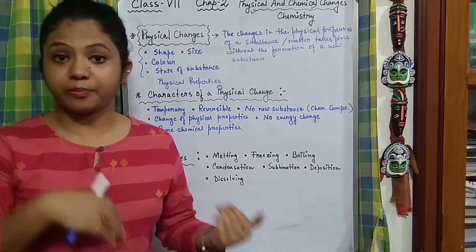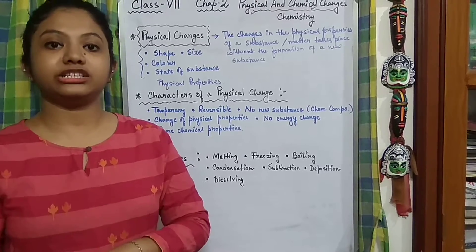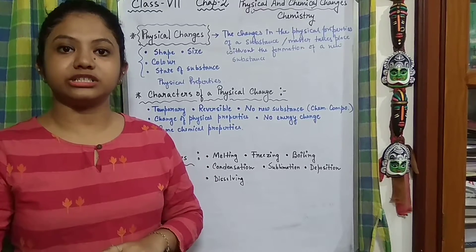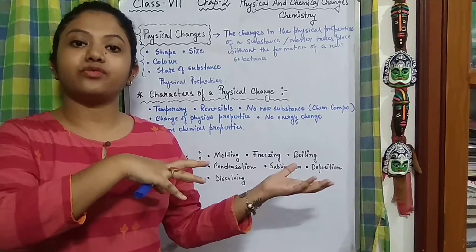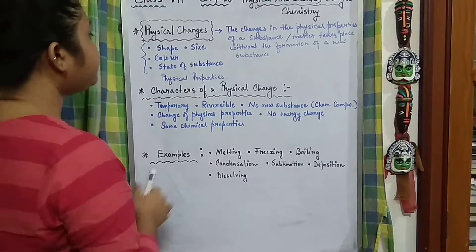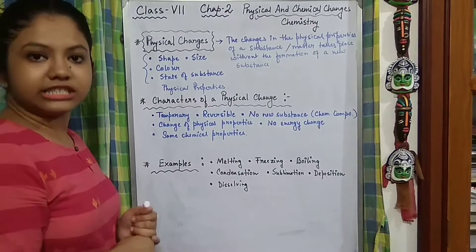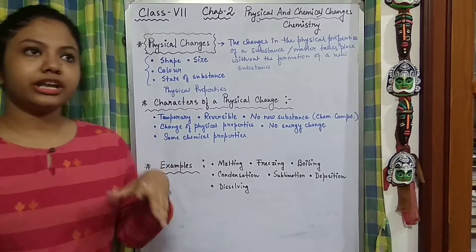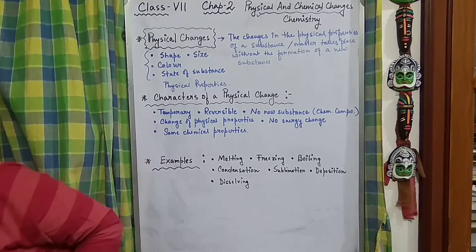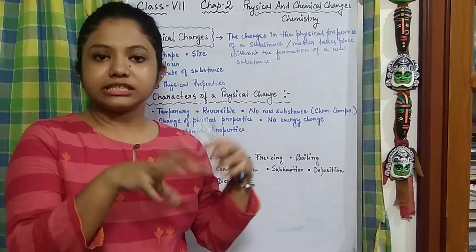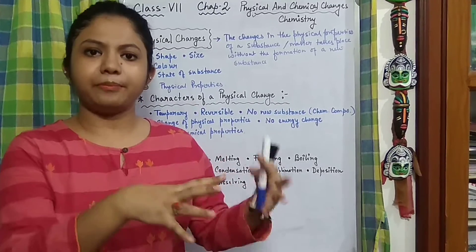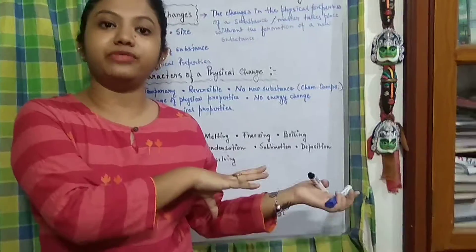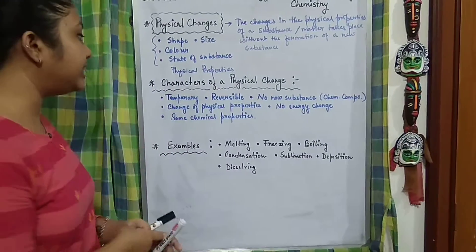The important thing about physical changes is that no new substance is formed, and no changes in the chemical property or chemical constitution occur — where it involves the molecules, the composition of the molecules and their bonding, intermolecular spaces and various properties. Where a change cannot be reversed, it will be irreversible, one directional change, and we cannot get the previous form of the substance back. So what are the characteristics of a physical change? First of all, it is generally a temporary change. Why it is temporary? Because these kinds of changes are apparent, they are not permanent.